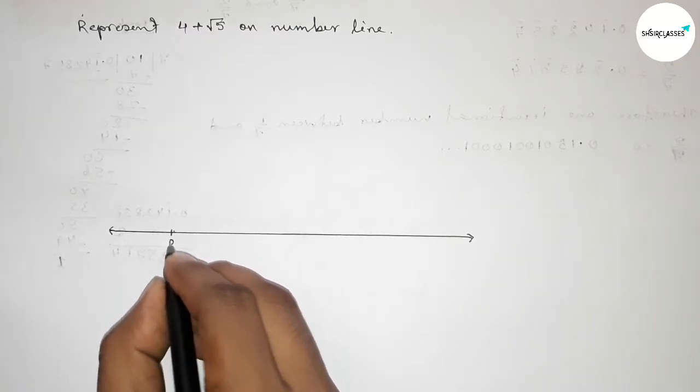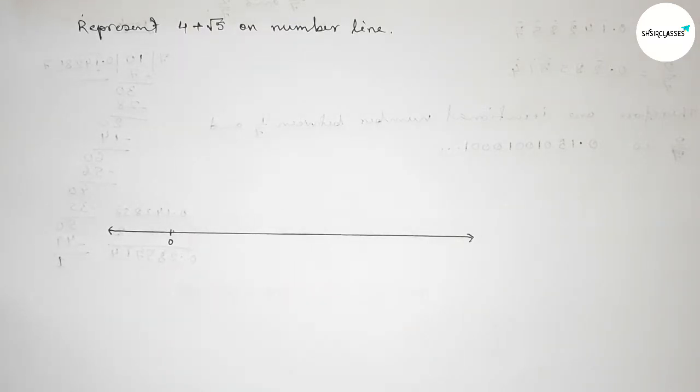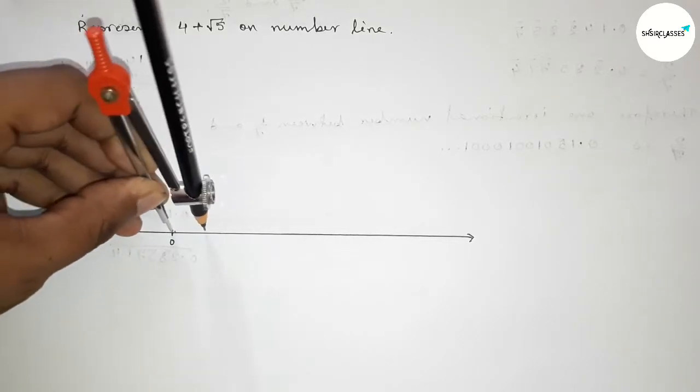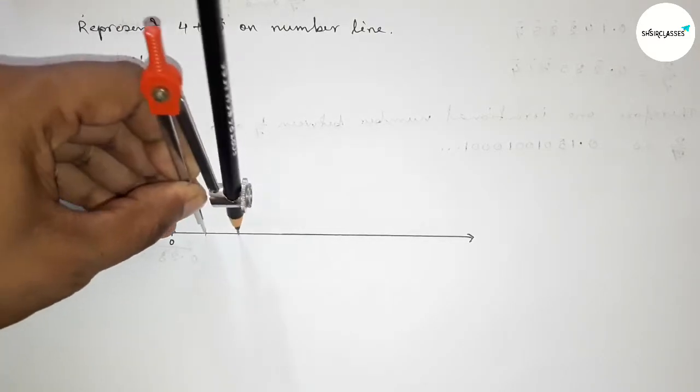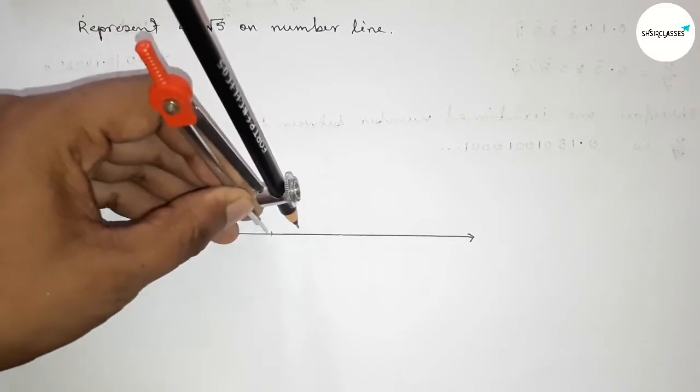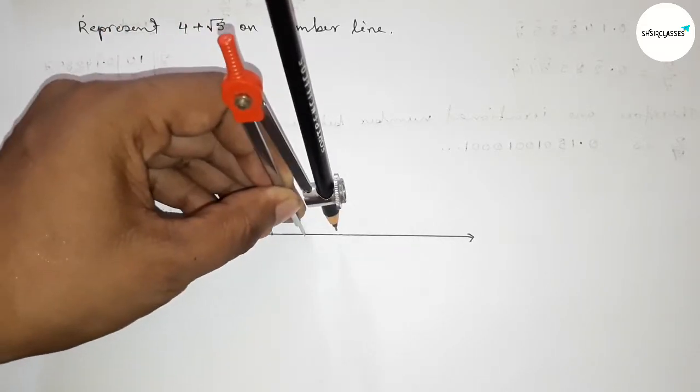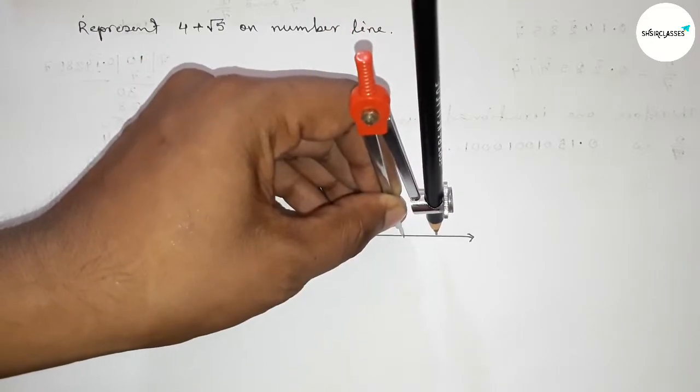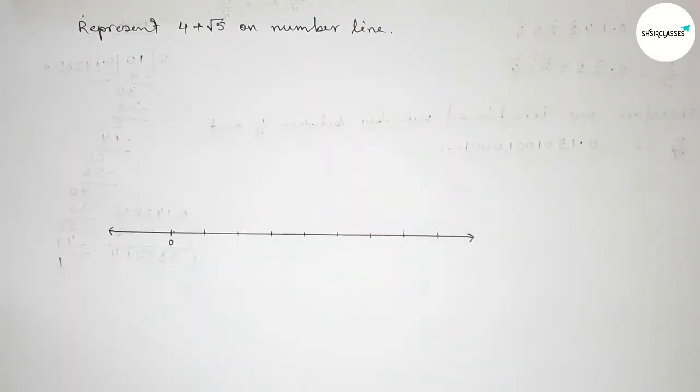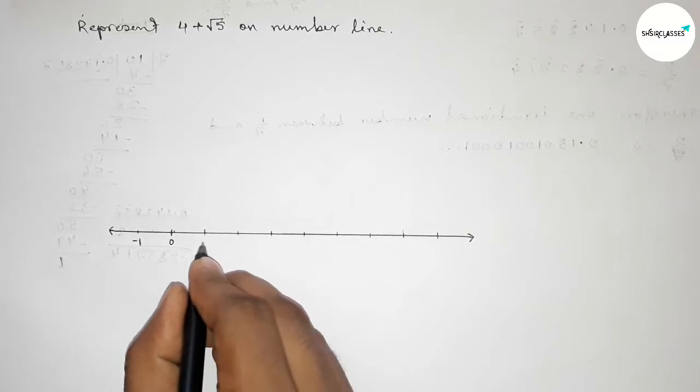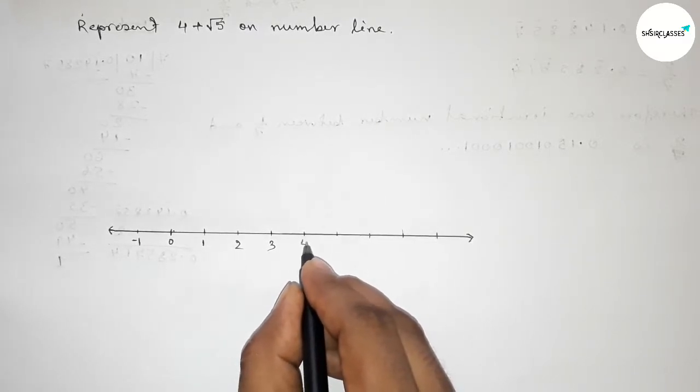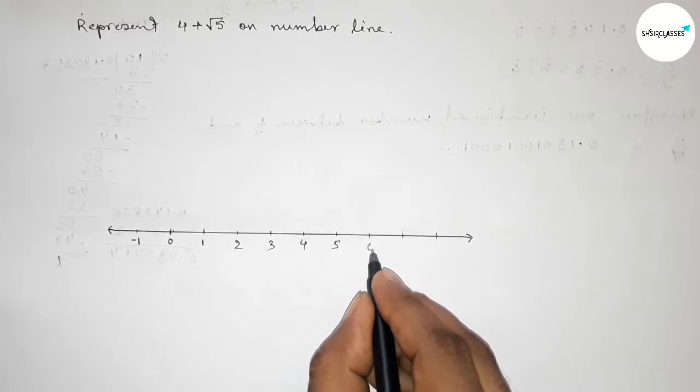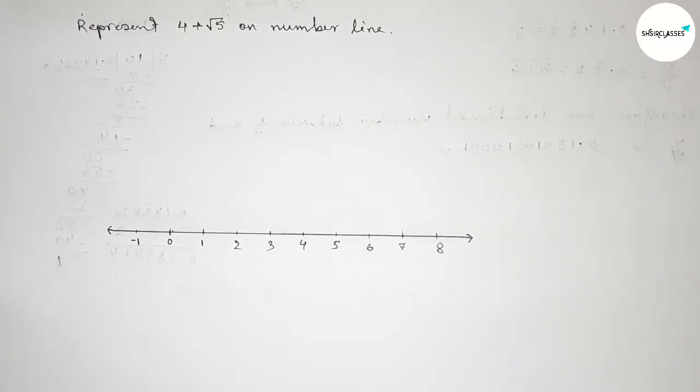Now taking here number zero. Now by using compass and marking the numbers on the line, the length of the compass is taking one unit length. So first marking the numbers on the line by this way, okay. So now taking here minus one, here one, two, three, four, five, six, seven, eight, and continuous.